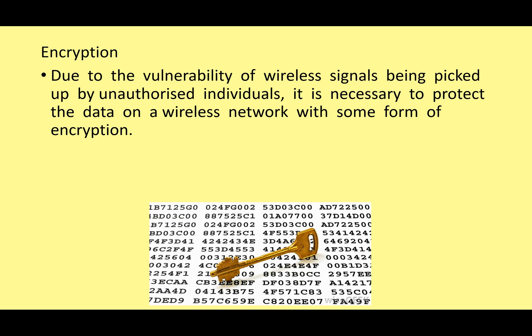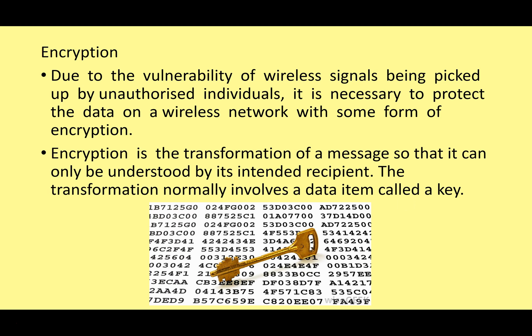Now let's look at a very important subject: encryption. Due to the vulnerability of wireless signals being picked up by unauthorized individuals, it's necessary to protect data on a wireless network with encryption. Encryption is simply transforming a message so that it can only be understood by the intended recipient — if anybody else receives the data it's just unreadable.